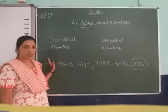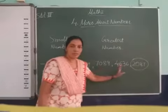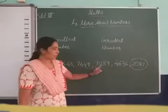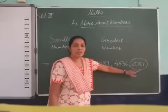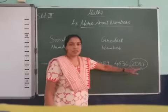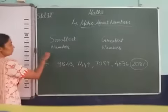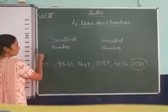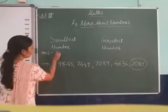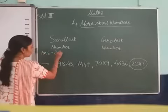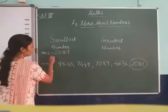Yes, out of all these numbers, 2, 0, 8, 7 is the smallest number. So let me put the answer here: 2, 0, 8, 7.